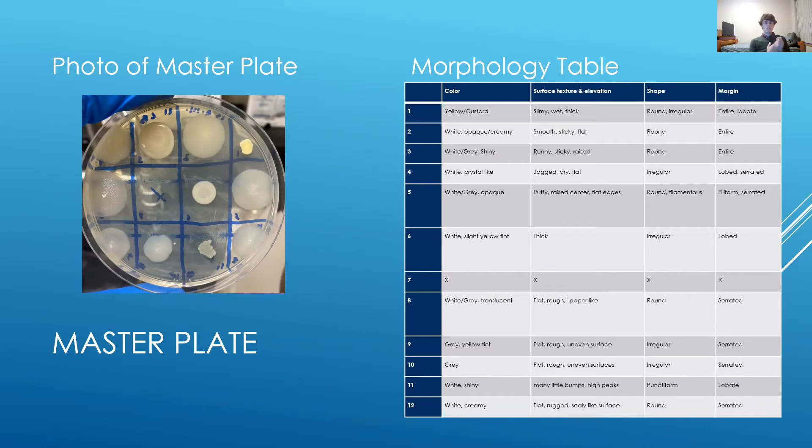The master plate allows us to compare different colonies. After comparing mine, which you can see in the table, I likely had only 10 unique isolates. Isolate 7 had some contamination during the streak plating and didn't grow. Isolates 9 and 10 were likely from the same colony, which raises an interesting question that I will bring up when looking at the antibiotic production tests.